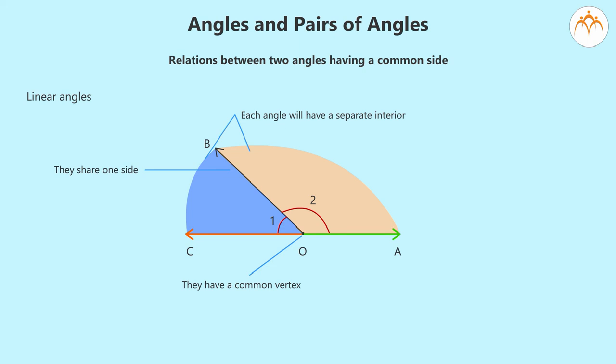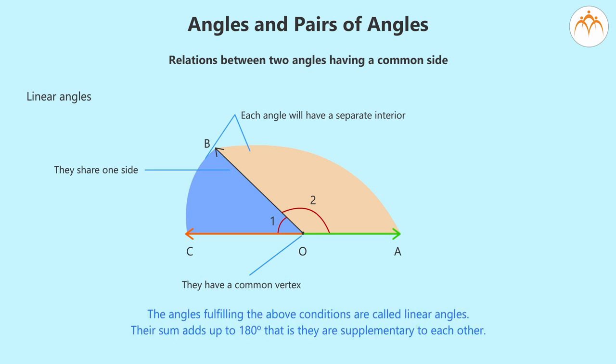Two rays which have a common origin and form a straight line are said to be opposite rays. O-C and O-A are opposite rays. The angles fulfilling the above condition are called linear angles. Their sum adds up to 180 degrees that is, they are supplementary to each other.